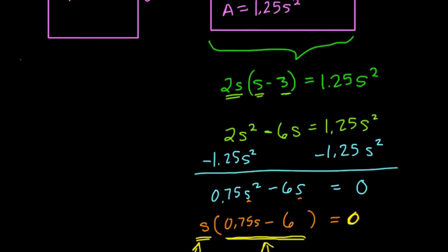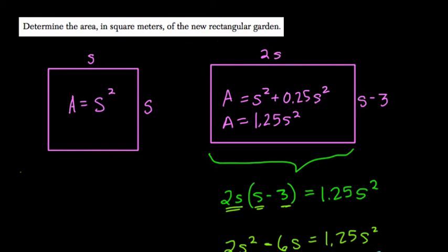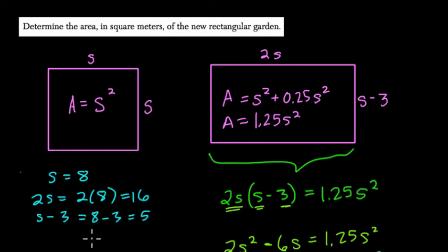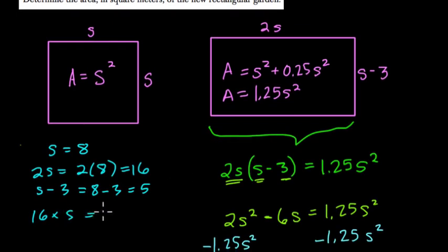But they want to know, what do they want to know? Let's see, what is the area of the new rectangular garden? So we're saying S equals 8. So what would that mean? 2S, that would equal 2 times 8, right? Or 16. And then S minus 3, what would that equal? That's the other dimension. That would be 8 minus 3, or 5. So here, the area of the new garden is 16 times 5, which is 80. Now, here, this is our answer. 80 is the area of the new garden.